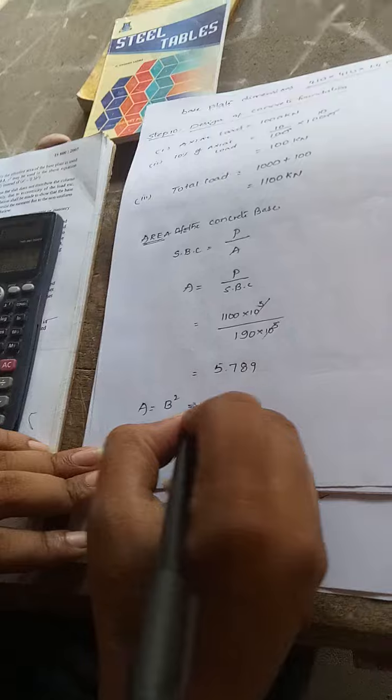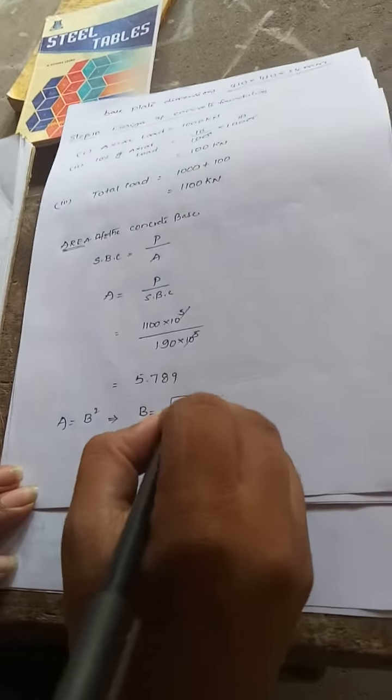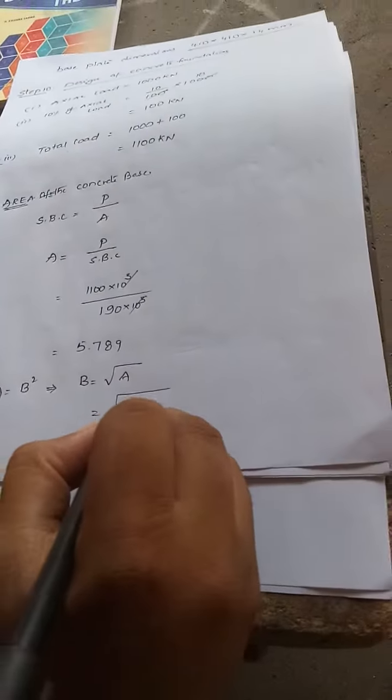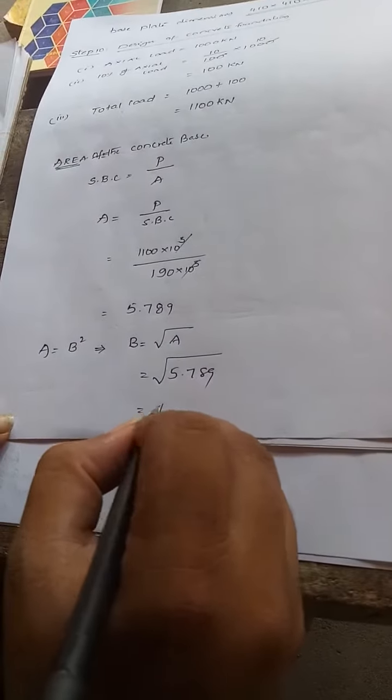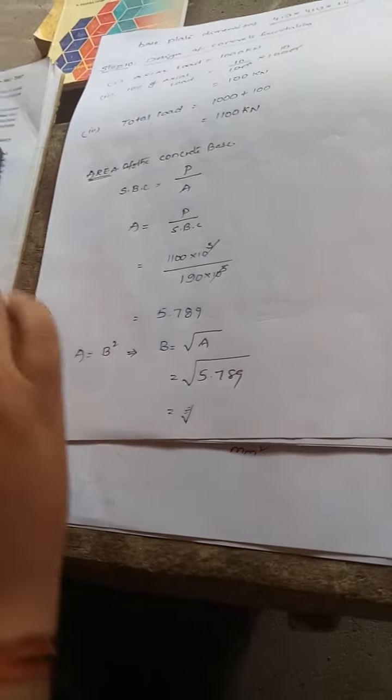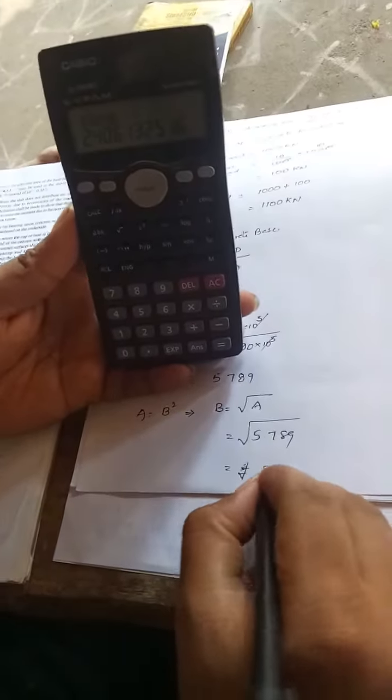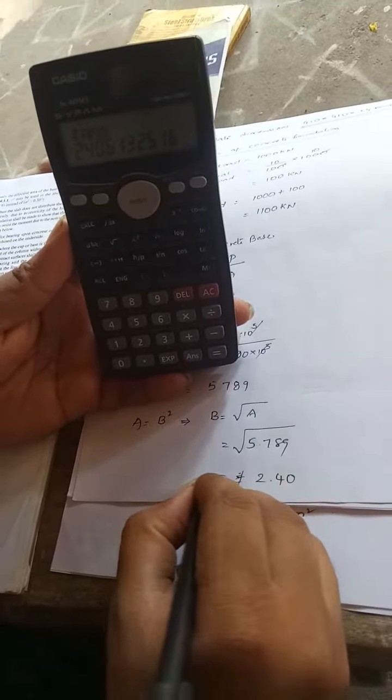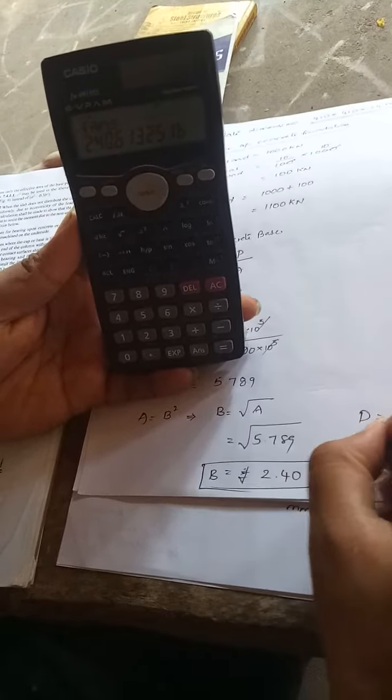square. Then B equals square root of A, 5.789. Square root of 5.789 is 2.40. Then D equals